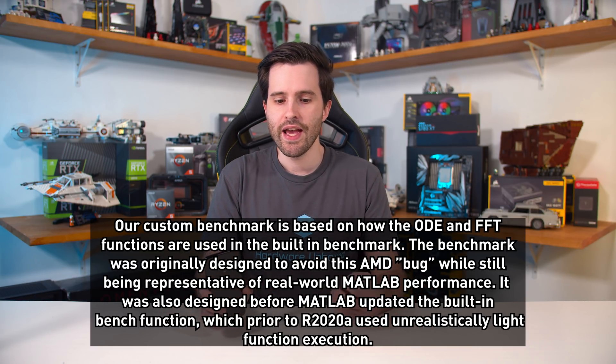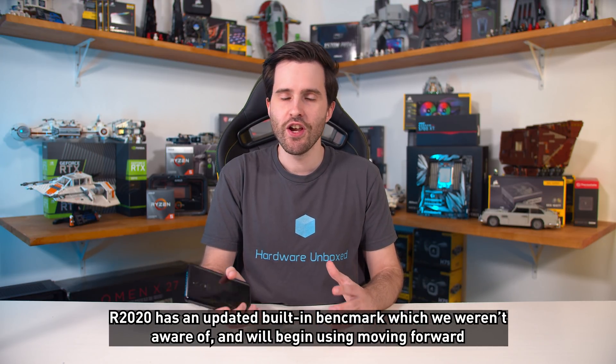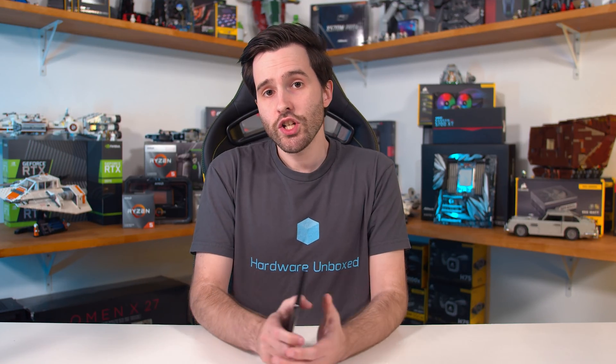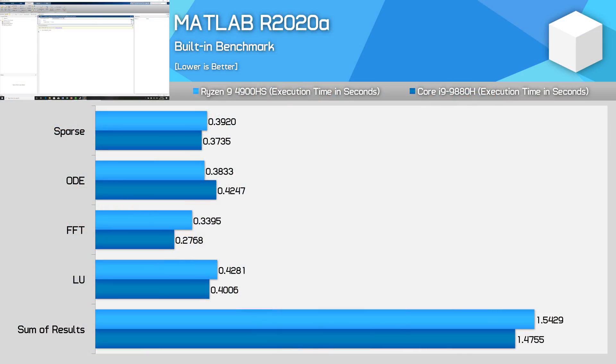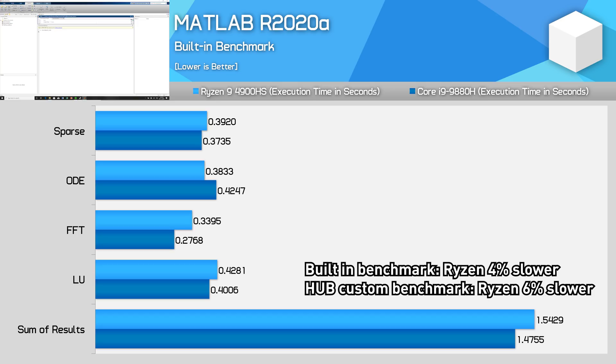We don't want any dodginess going on. We're giving you guys an accurate reflection of how an optimized version of the software for these processors performs on either brand. It's actually the case with Ryzen 4000 that ODE solving is marginally faster on AMD processors while FFTs are slower. If we look at the built-in MATLAB R2020A benchmark on Ryzen 4000 and Intel, the Ryzen 9 4900HS is faster at ODEs, slightly slower in LU and sparse, and slower in FFTs. Previously, it was the LU and sparse workloads that would be twice as slow on Ryzen. The last couple of updates to MATLAB have significantly improved performance on both Intel and AMD processors, and R2020A seems to have cleared up the final performance issues with AMD. That's a full comprehensive breakdown of MATLAB performance with these Ryzen 4000 processors.